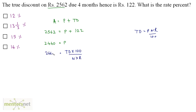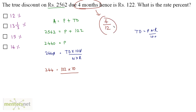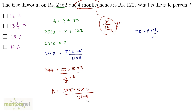On the left hand side we have 2440. The zeros cancel, giving 244 equals true discount 122 times 10, divided by N times R. N is 4 months, which we convert to years: 4 out of 12 months equals 1/3 years. So this becomes 244 equals 122 times 10 divided by 1/3 times R, meaning 3 comes to the numerator. Therefore R equals 122 times 10 times 3 divided by 244. Since 122 times 2 is 244, this simplifies to 5 times 3, which is 15%. Our answer is option C.